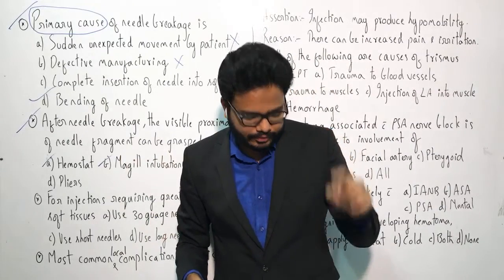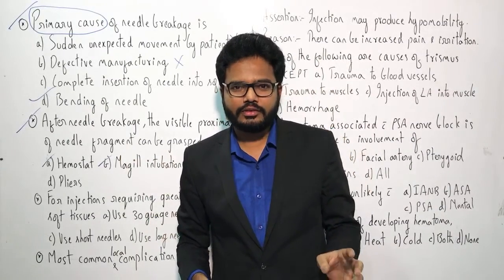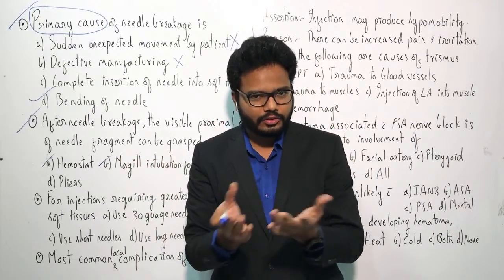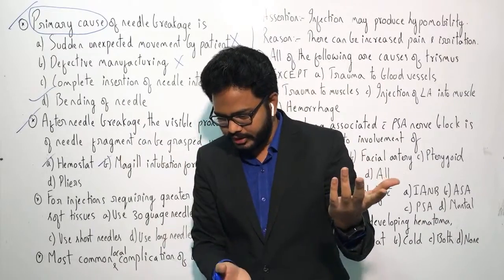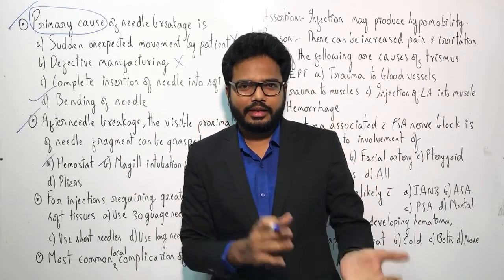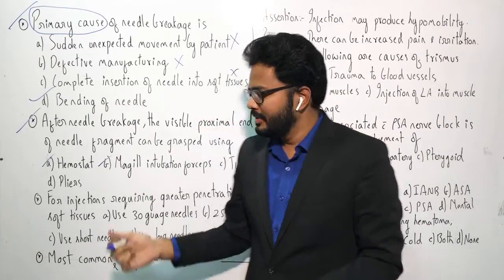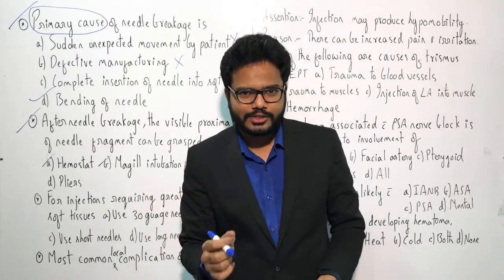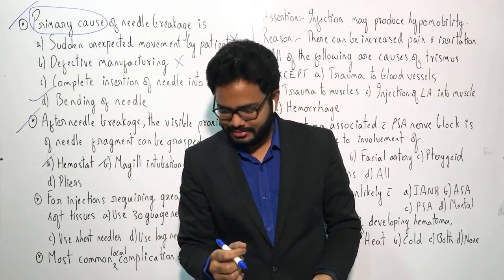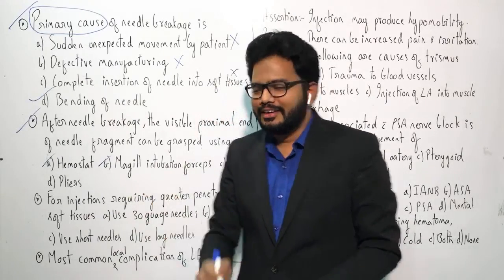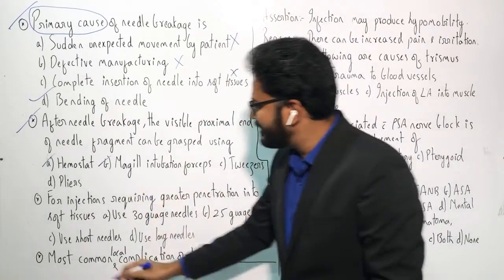The first image is that of a hemostat, as Rituja, Vaishnavi, and others rightly mentioned. The second one is Magill intubation forceps. So the answer is A and B — those who said only A get plus two, those who said A and B get plus four. Well done.